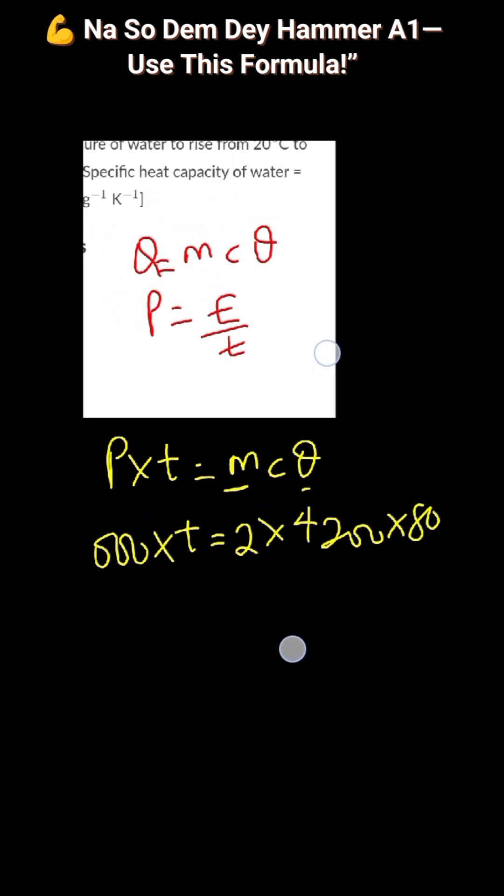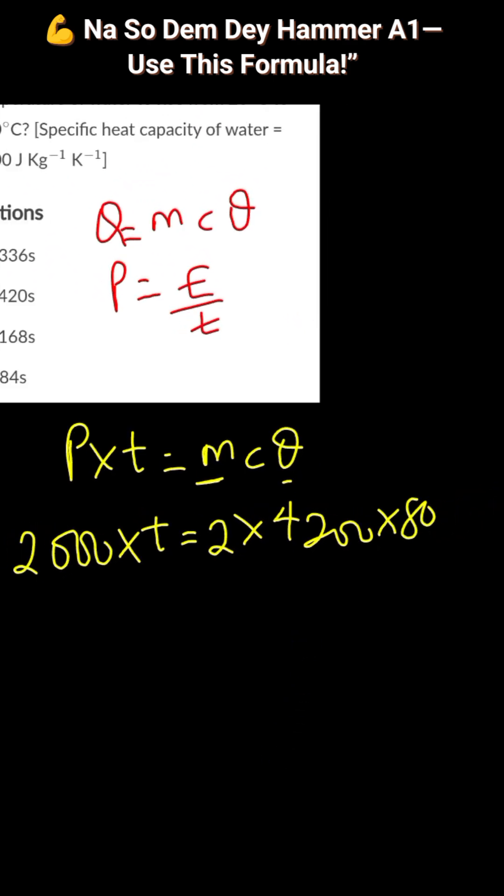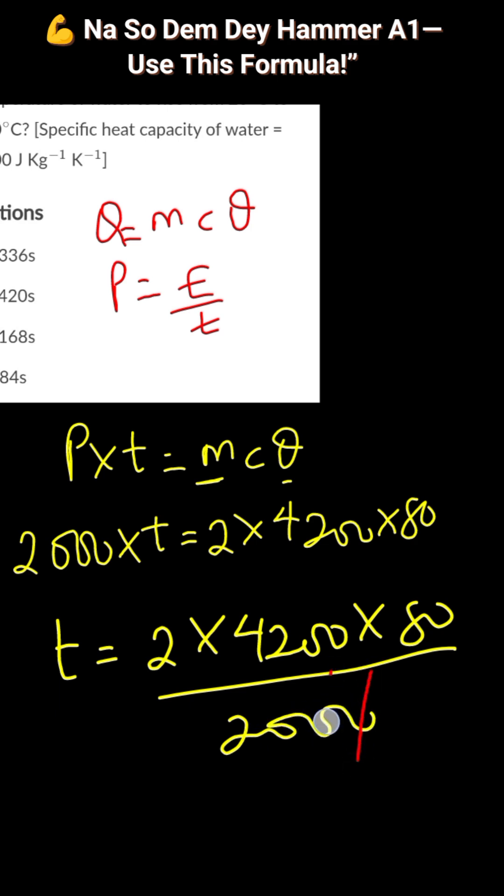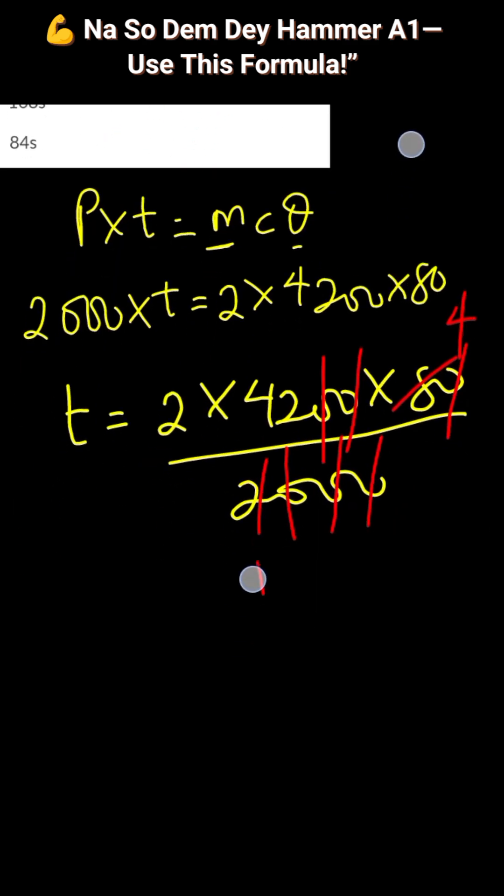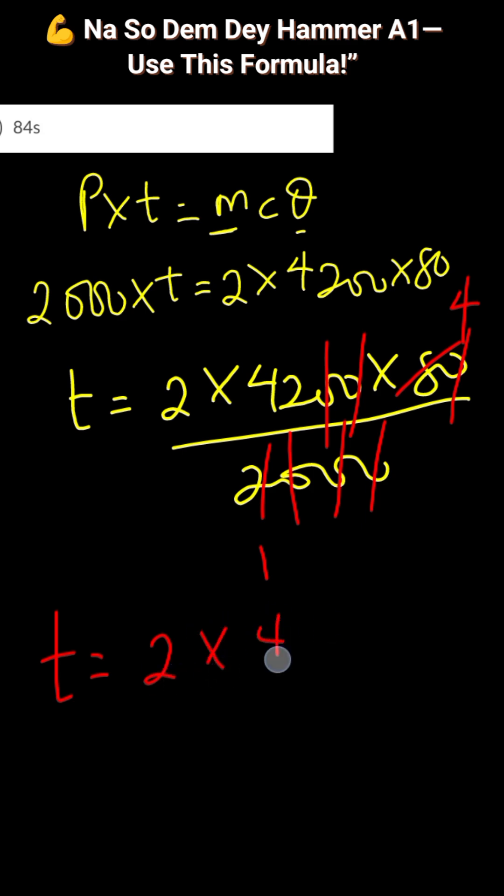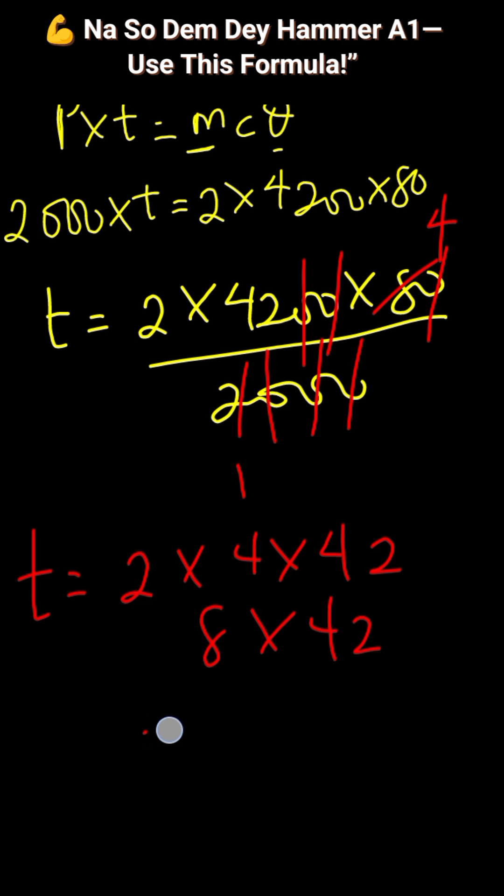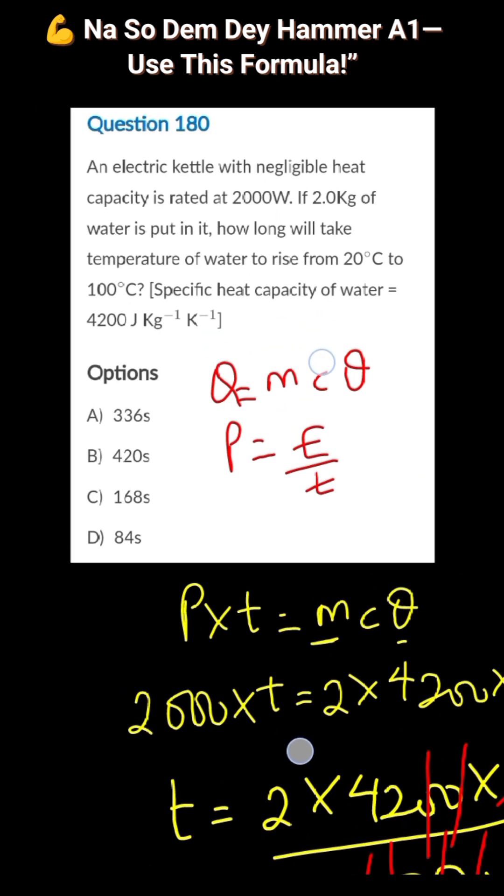Let me simplify it further. Divide both sides by 2000. That'll give you t equals 2 times 4200 times 80 divided by 2000. If you cut it out, 2 here, 2 here is 4. So you have 2 times 4 times 42. That's 8 times 42. If you multiply this out, you get 336 seconds.